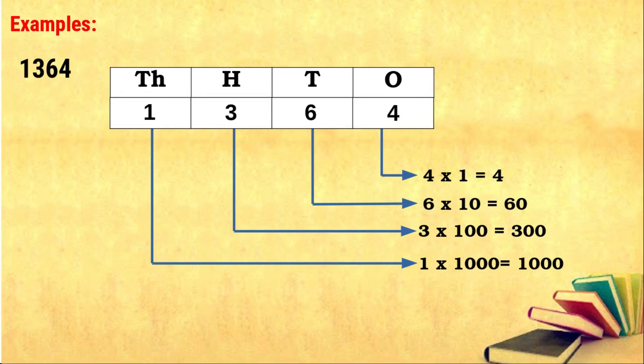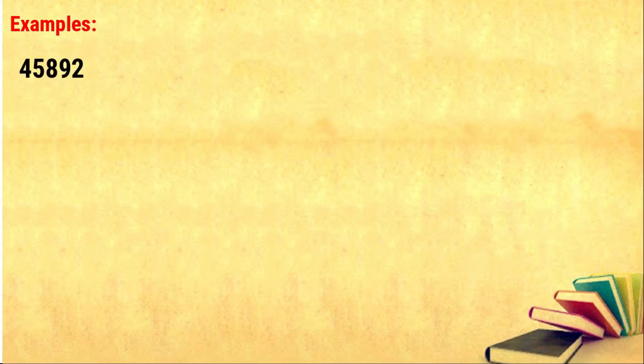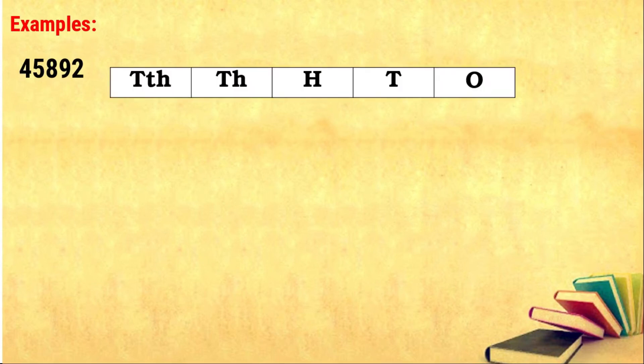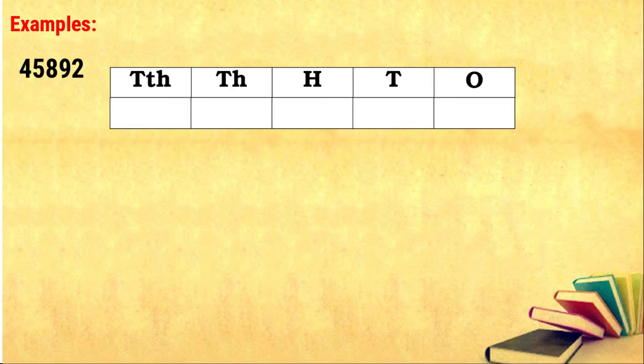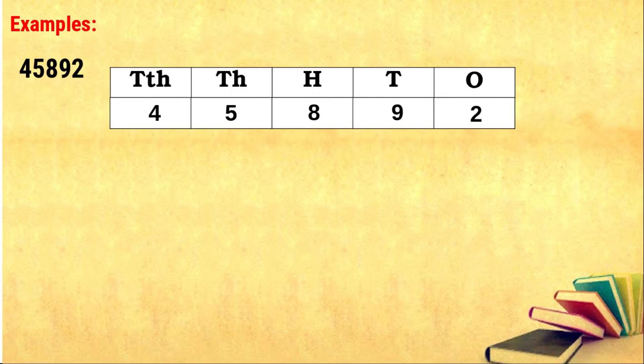Now we will move to another example. The given number is forty five thousand eight hundred and ninety two. We want to place this number in the place value chart from the right side: two in the ones place, nine in the tens place, eight in the hundreds place, five in the thousands place, and four in the ten thousands place.